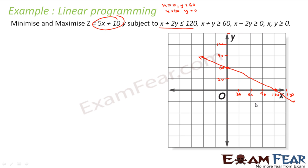Now we have to find whether the feasible region is on this side or that side. Put (0, 0): x + 2y = 0 + 0 = 0, which is less than 120, so (0, 0) satisfies this condition. So the feasible region for the first equation is on the side containing the origin.